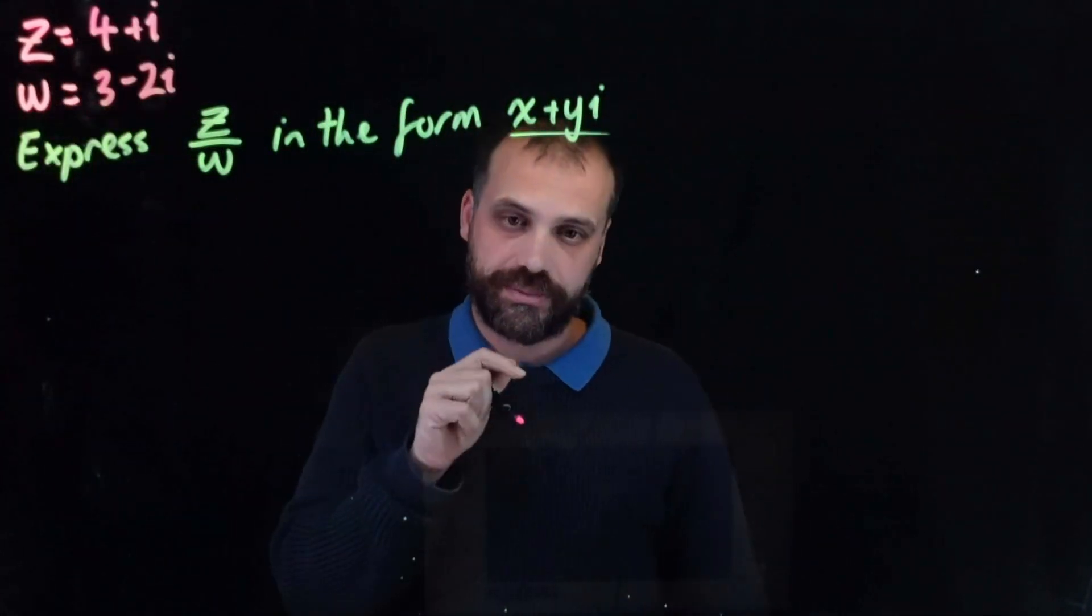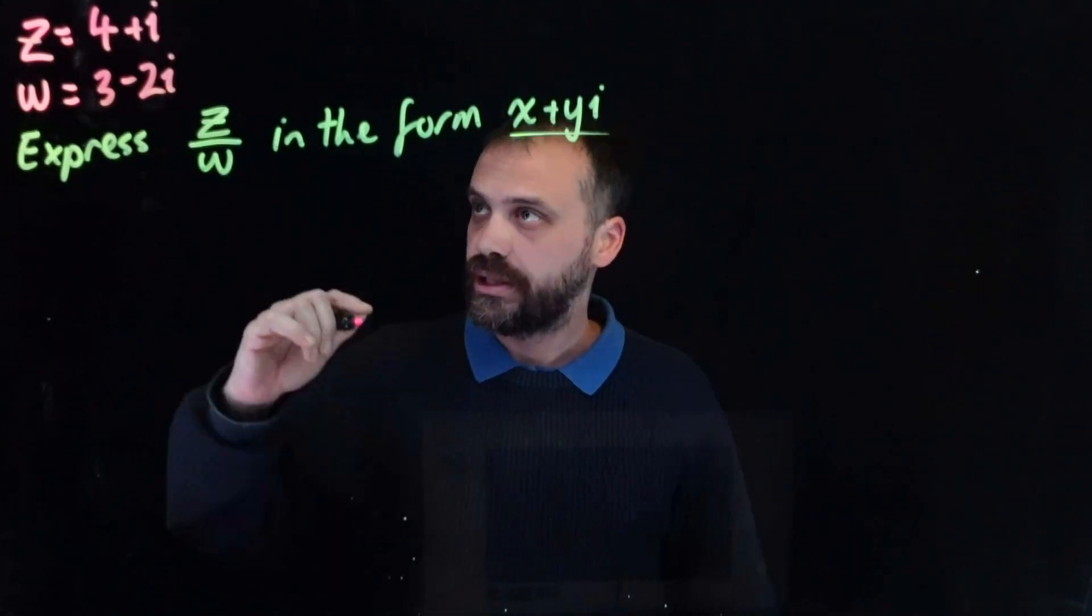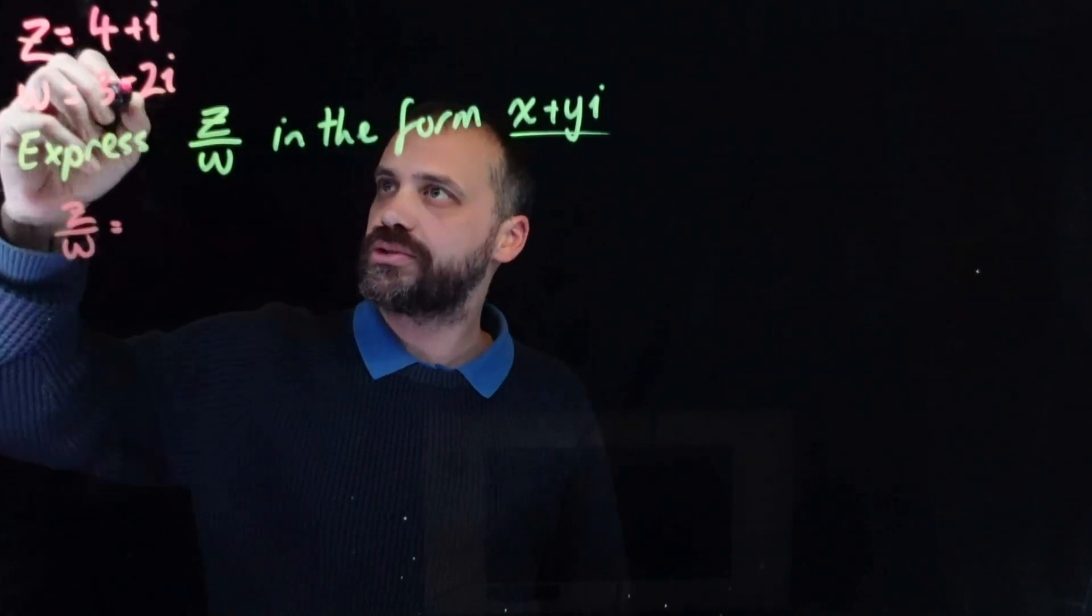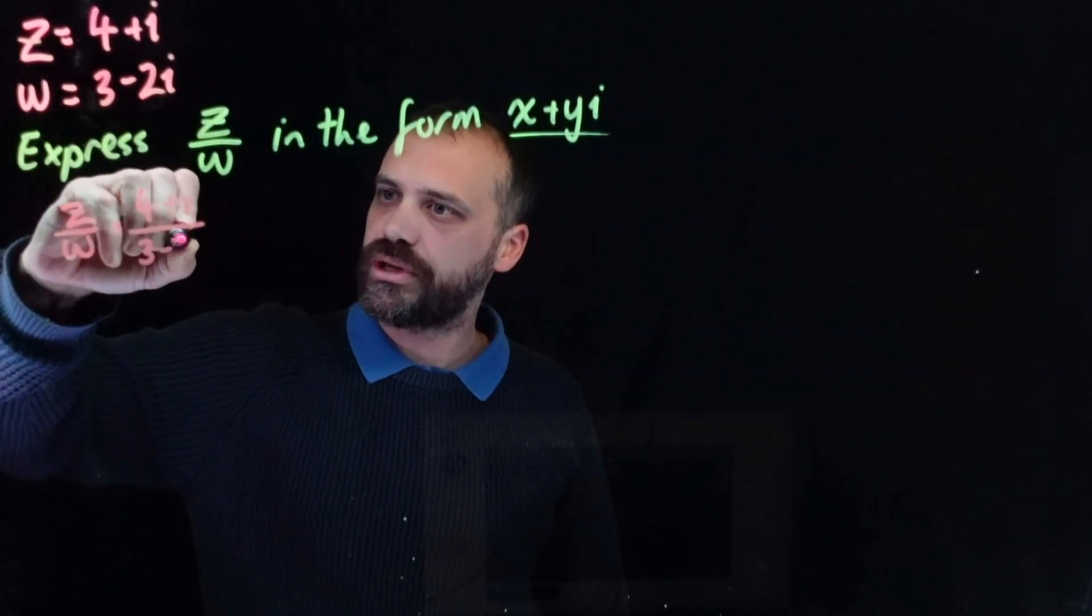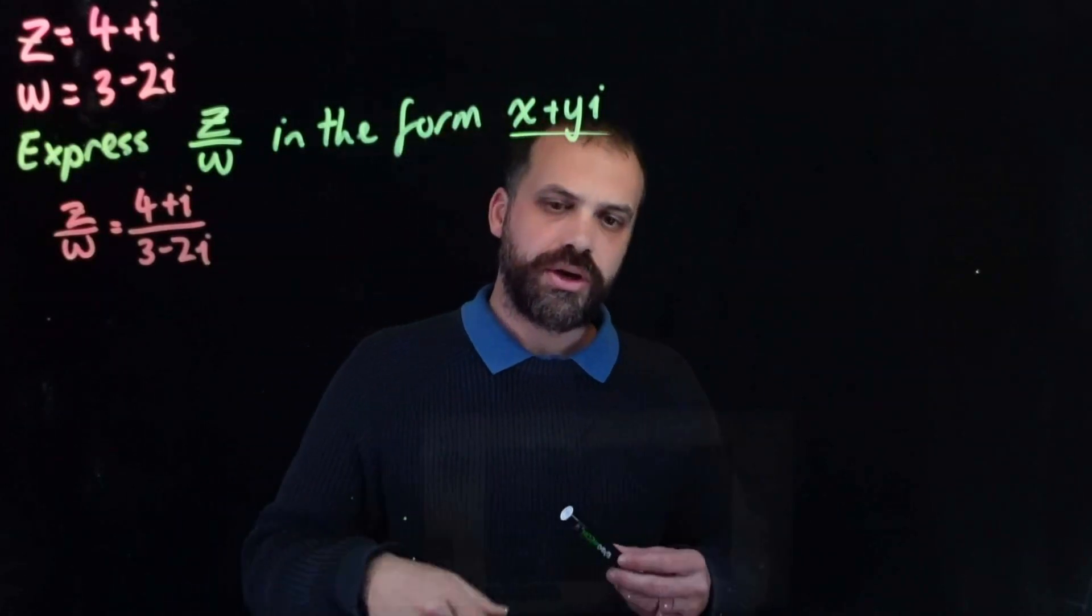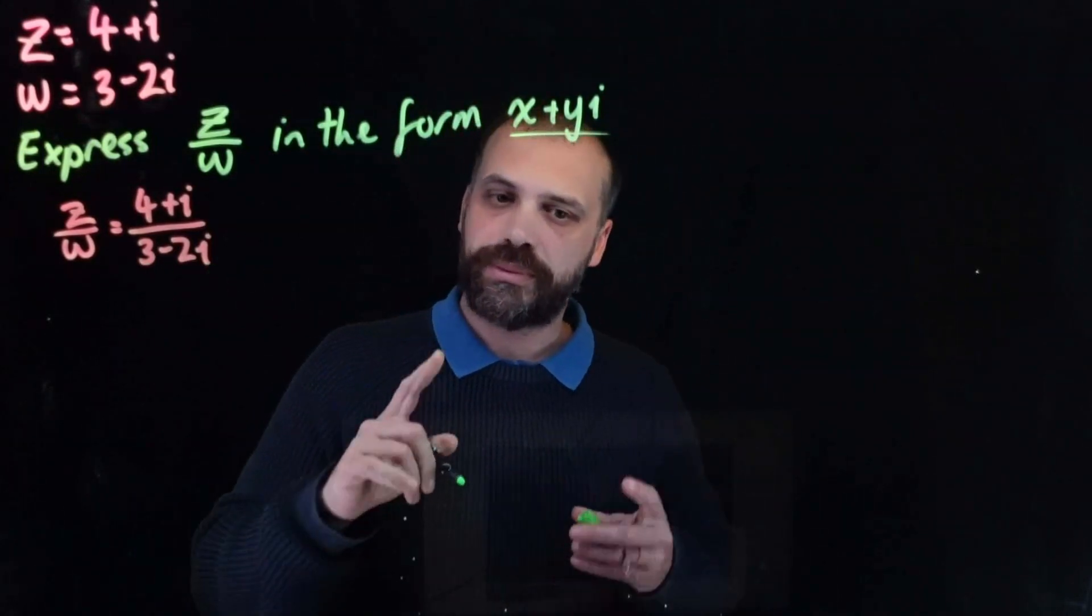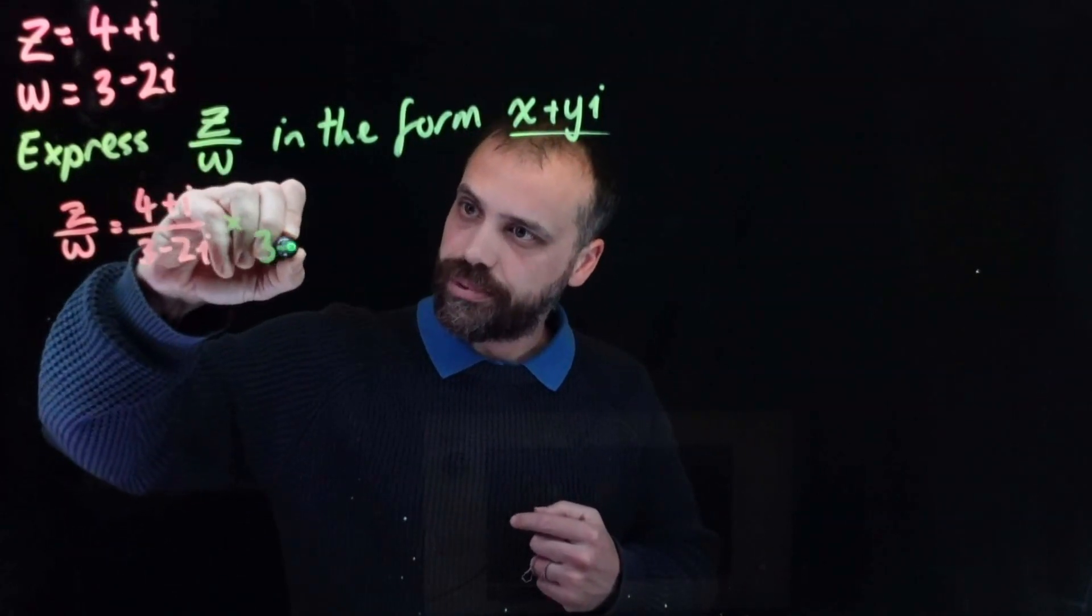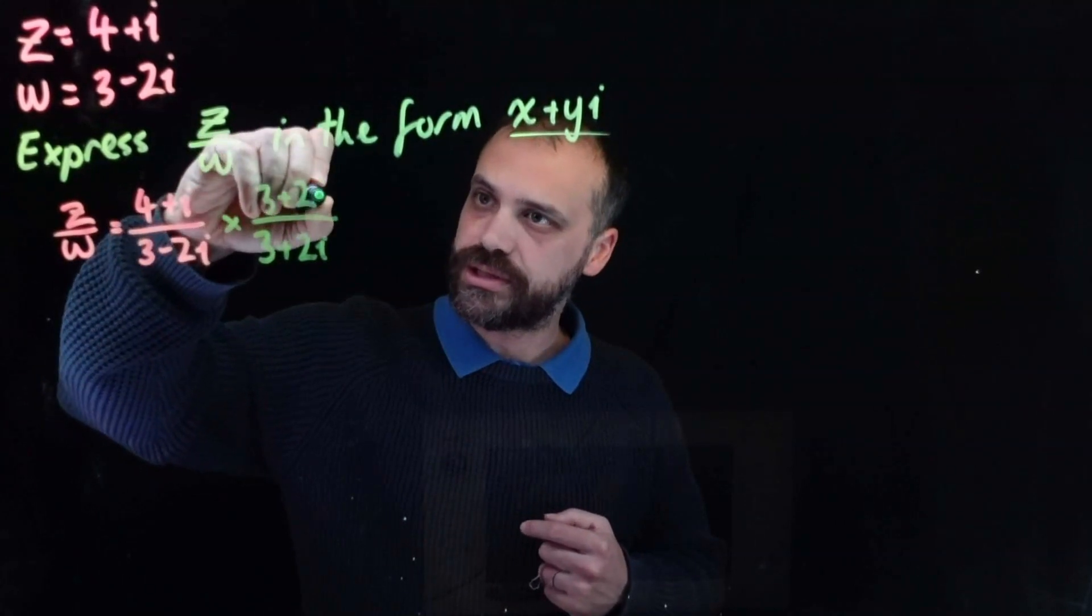We have two different complex numbers this time, but we're still dividing them by each other. That's what the whole video is about. So we have z over w equals z, which is 4 plus i, over w, which is 3 minus 2i. So we find the conjugate of the denominator. This is the denominator. We multiply by the conjugate top and bottom. So multiply by 3 plus 2i over 3 plus 2i.